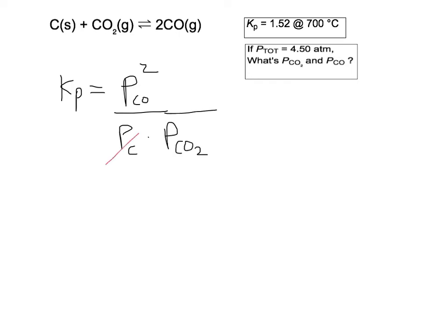The thing to remember here is that any time you've got a solid or a liquid or the solvent, then you're going to set its effective concentration or effective pressure to 1. And so that tells us that Kp is just equal to the partial pressure of carbon monoxide squared over the partial pressure of carbon dioxide. And we're told in the problem that this is 1.52.